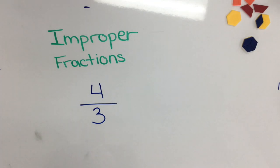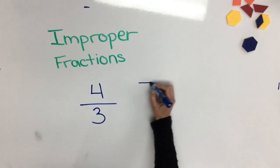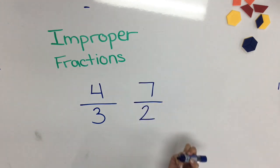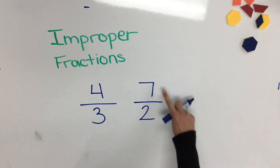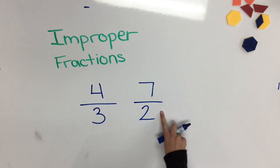Another example of an improper fraction may be seven halves. Again my numerator is larger than my denominator so it's improper.